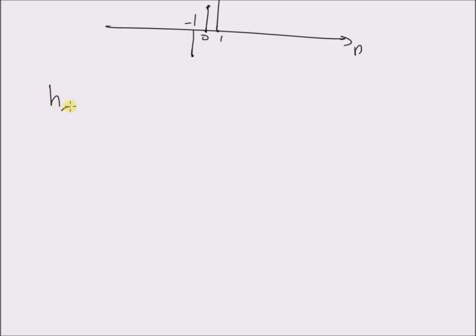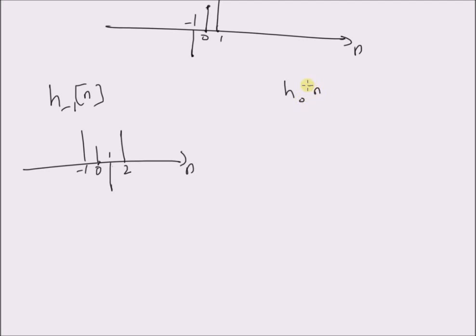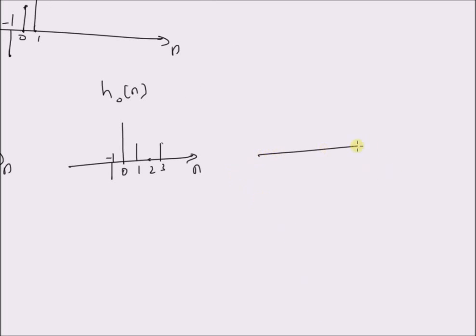This is x(n) and now we have three possible structures for h_k(n). For h_{-1}(n), we have the following structure, where the origin is 0 and the points are at minus 1, plus 1, and 2. For h_0(n), we have the following sequence with points at minus 1, 0, 1, 2, and 3. We also have h_1(n), which has a non-zero value at minus 1, zero at 0, and a negative value at 1 and 2.